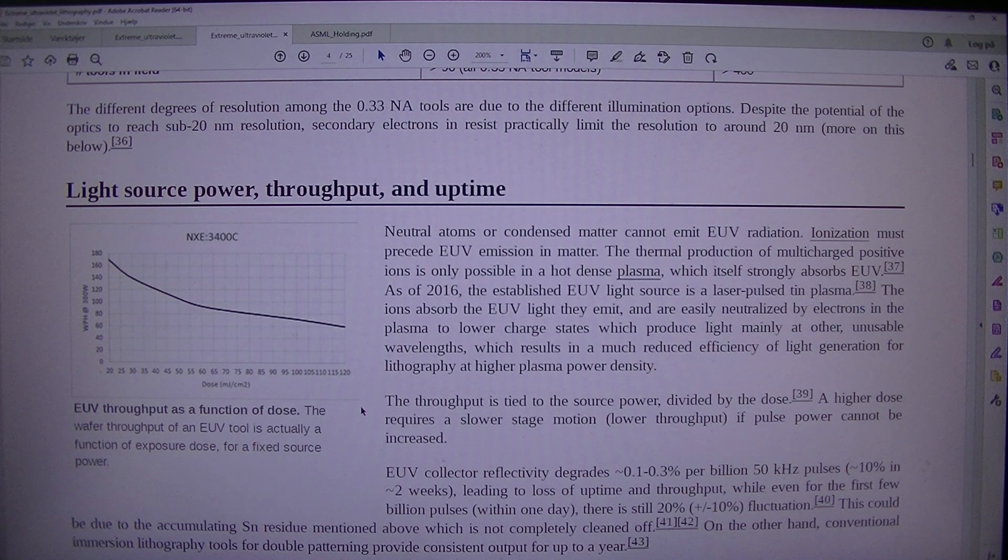A higher dose requires a slower stage motion, lower throughput if pulse power cannot be increased. The reflector reflectivity degrades approximately 0.1 to 0.3 percent per billion 50 kHz pulses, approximately 10 percent in approximately two weeks, leading to loss of uptime and throughput. Even for the first few billion pulses within one day, there is still 20 percent fluctuation. This could be due to the accumulating tin residue mentioned above which is not completely cleaned.